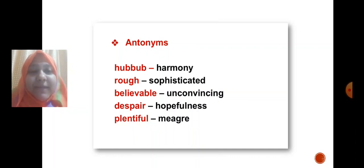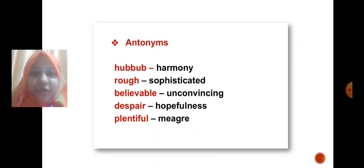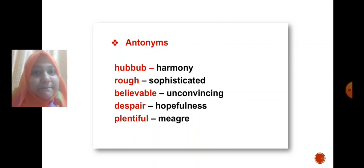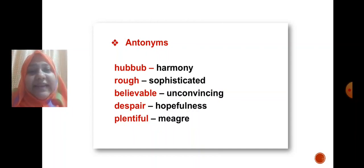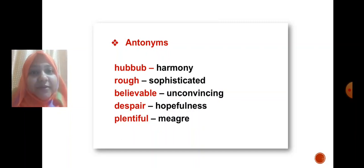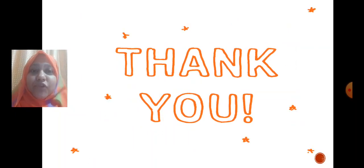'Lounged' means in a relaxed position — synonym is 'idle.' Now antonyms — opposite words: 'Hubbub' means chaos, noise, or a crowded place — antonym is 'harmony,' meaning peaceful. 'Rough' in the context of the chapter means ill-mannered, hooligan-like — antonym is 'sophisticated,' meaning mannered. 'Believable' — antonym is 'unconvincing.' 'Despair' means completely hopeless — antonym is 'hopefulness.' 'Plentiful' — antonym is 'meager,' which means very small in quantity.